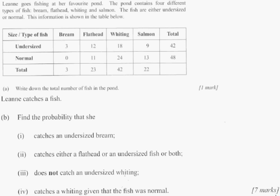Part A says: write down the total number of fish in the pond. All you've got to do is add these together. 42 plus 48 is 90. You could also add these together and they would equal 90. That's easy — one mark. We're off to the races.